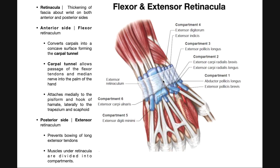This would be the extensor retinaculum, and this is the dorsal surface of the hand — a posterior view in anatomical position. You can see the extensor muscles and their tendons extending toward the hand. This extensor retinaculum wraps around those tendons and their associated synovial sheaths, covering them as they traverse from the muscular bellies into the hand. You can see it wraps around both the tendons and the synovial sheaths in blue right here.